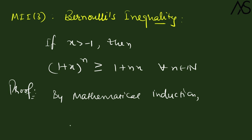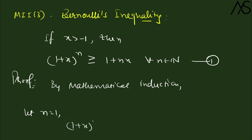Let's call the inequality we want to prove 'inequality 1'. For n = 1: (1 + x) to the power 1 equals 1 + 1·x, so left-hand side equals right-hand side. Equality holds, which satisfies inequality 1 (since ≥ includes equality). So the base case holds.